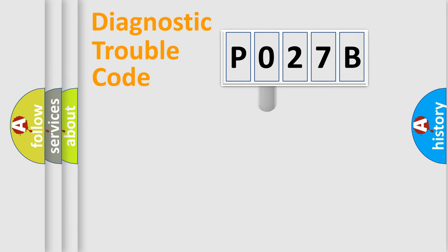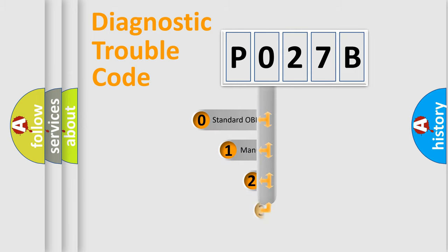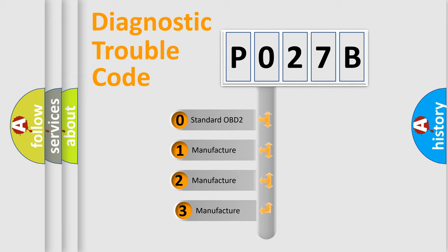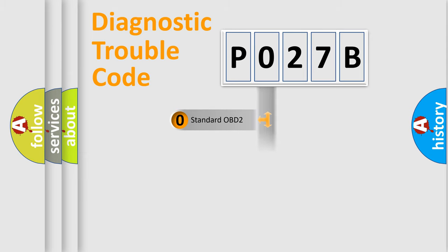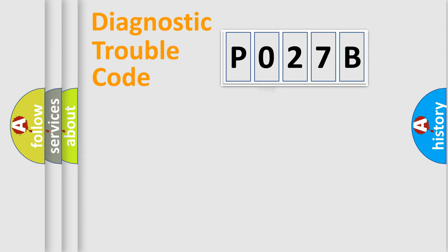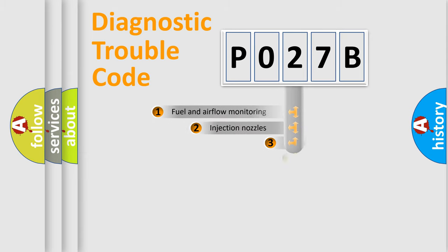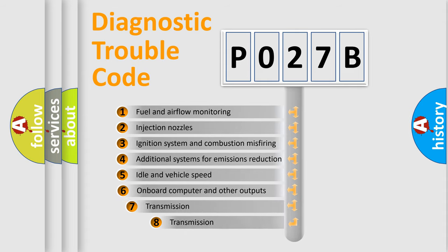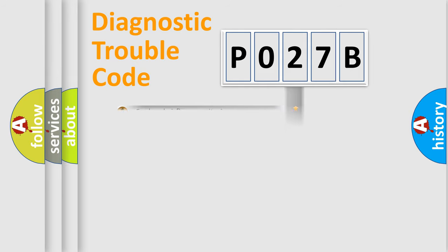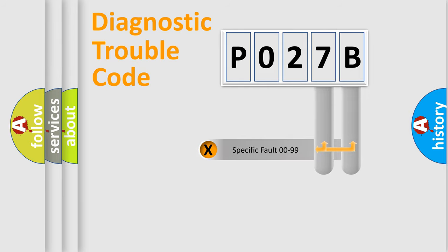This distribution is defined in the first character of the code. If the second character is expressed as zero, it is a standardized error. In the case of numbers 1, 2, or 3, it is a manufacturer-specific error. The third character specifies a subset of errors. The distribution shown is valid only for the standardized DTC code. Only the last two characters define the specific fault of the group.